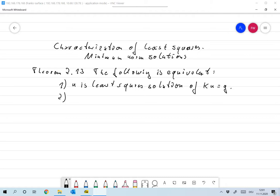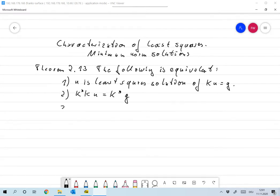It's the same as k star ku is the same as k star g, or ku is the projection of g onto the range, on the closure of the range of the image of k. So, p is the orthogonal projection onto the range of k closure.